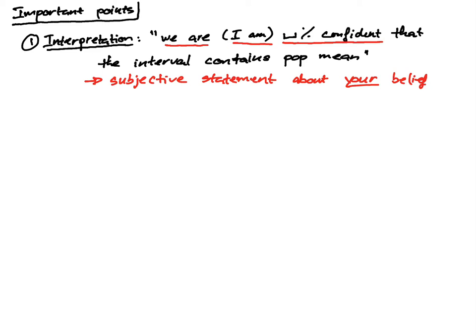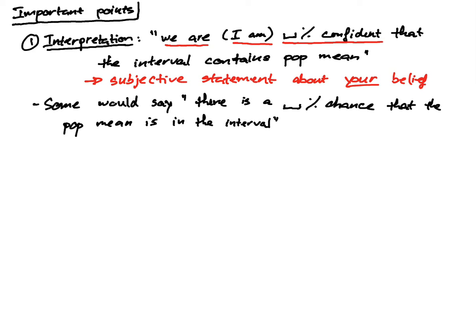Now, a common mistake that a lot of people make is that some would say there is a whatever percent chance that the population mean is in the interval. And this is an incorrect statement.